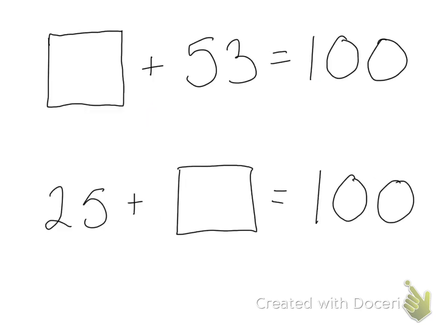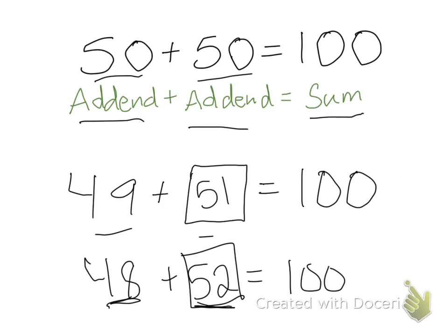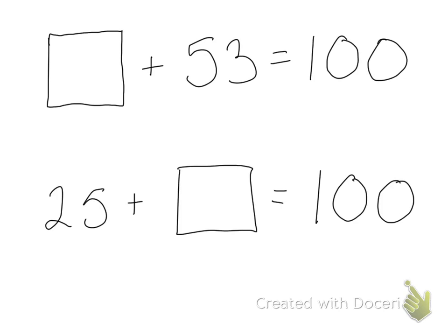On this one, something plus 53 equals 100. I already know that 48 plus 52 equals 100. So since this is 53, that means this number has to be 47. 47 plus 53 equals 100.